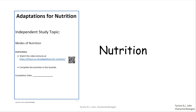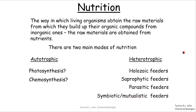This is slide two and the first thing we need to understand is the definition of nutrition — you need to copy that into your answer booklets. Basically, nutrition is just the way all organisms obtain the raw materials from which they build up organic compounds from inorganic ones. Some examples of inorganic compounds would be things like nitrate and CO2. These raw materials that are taken in by organisms are known as nutrients.